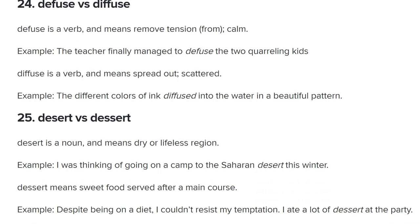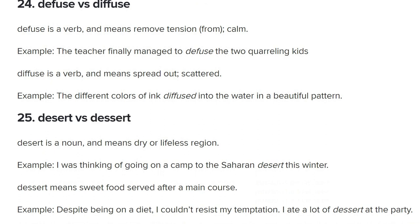Dessert versus desert — very commonly confused. The double S means you're going to eat it: ice cream, cheesecake, apple crumble. Desert with one S — think of the S's as having dried out. There used to be two S's, but when they dry out you get a dry region: a desert with camels and cacti. Dessert you eat, desert you walk through with a camel. These are also commonly mispronounced — the Sahara Desert versus an ice cream dessert.